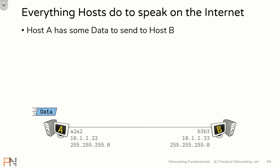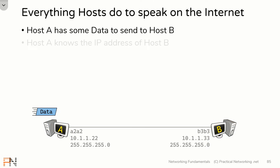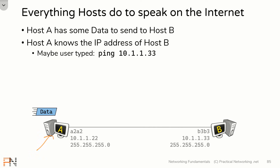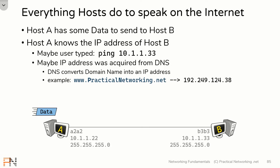Host A has some data it needs to send to host B. From the network perspective, we don't know or care what that data is — it's just a bunch of ones and zeros that needs to go from host A to host B. Host A also knows the IP address that it's trying to speak to — it knows the IP address of host B. The simplest explanation is maybe the user of host A jumped on the command prompt and typed ping 10.1.1.33, providing the IP address that needs to receive this data. Alternatively, maybe host A acquired the IP address of host B through DNS — a protocol which converts a domain name into an IP address. For example, when you type practicalnetworking.net in your web browser, DNS turns that domain name into an IP address that your computer can send a web request to.